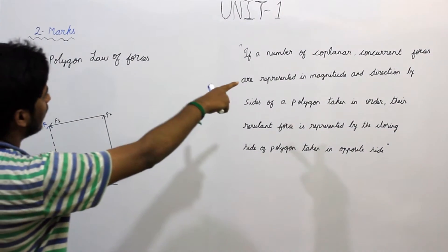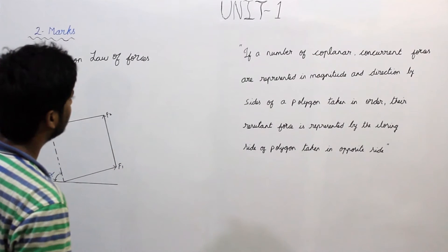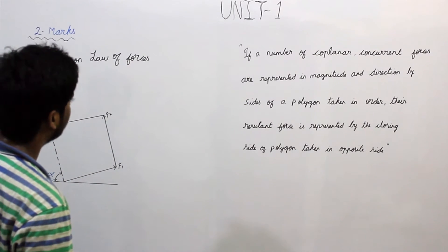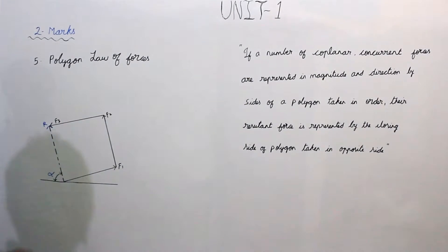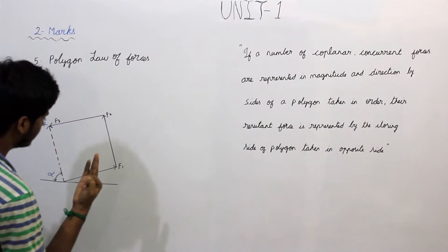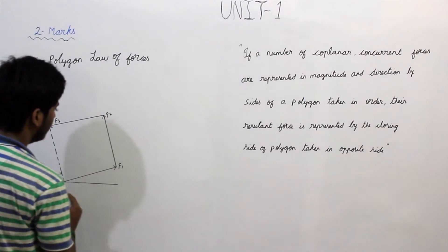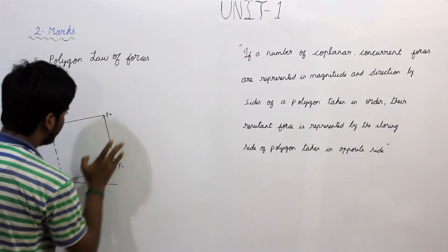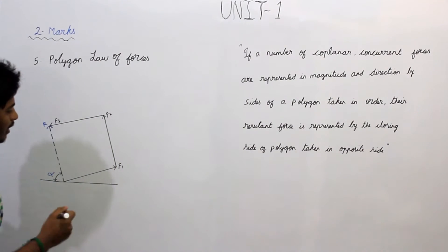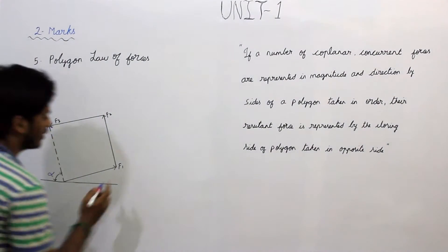If the number of coplanar forces are represented in magnitude and direction by the sides of a polygon, there are three forces acting in order. The three forces are acting in order in such a manner that they are acting in clockwise direction.